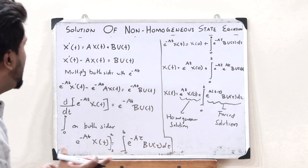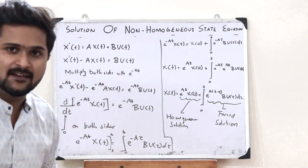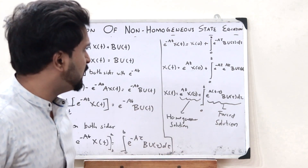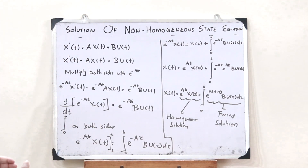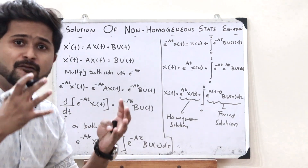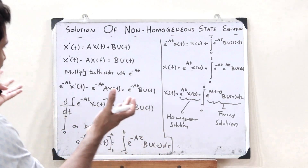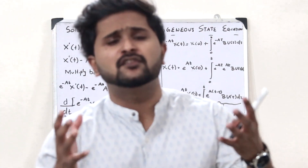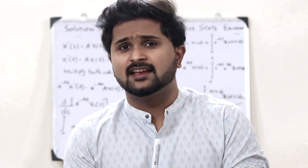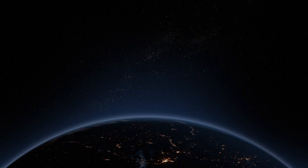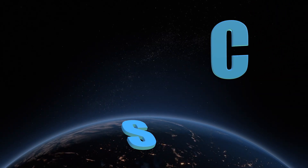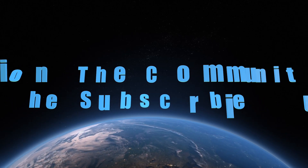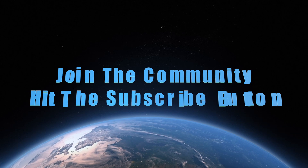Thus, this is simply how we find the solution of a non-homogeneous state equation. We get two solutions: the first is the homogeneous solution and the second is the forced solution. This is the solution of a non-homogeneous state equation in the case of a forced system. I hope you now have a clear understanding of this. If you found this video informative, please hit the like button and subscribe to this community.